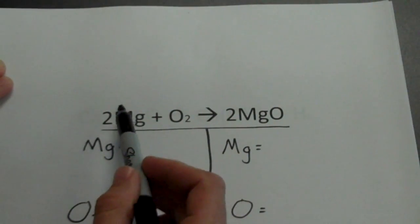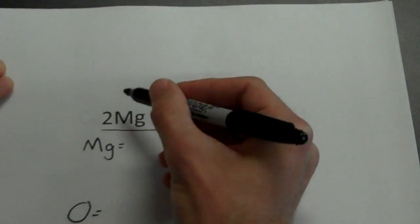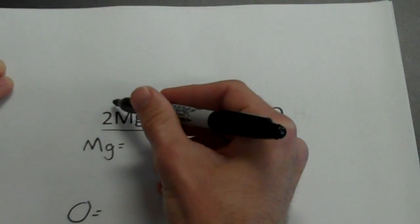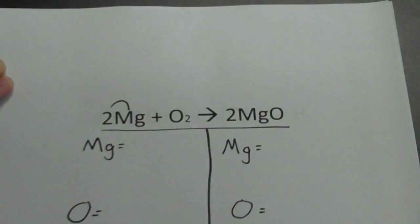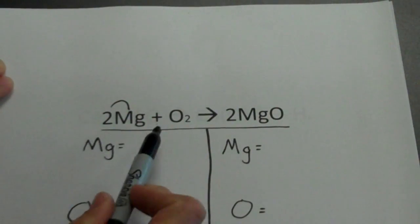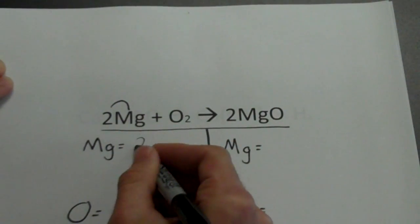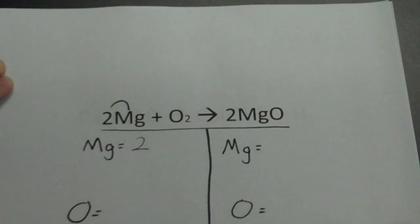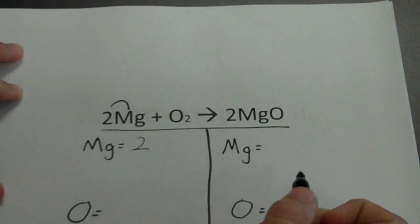Since I have a coefficient of 2, this 2 applies only to magnesium. That coefficient applies only to magnesium, and I know that I have 2 magnesiums. We're done with the magnesium on this side.